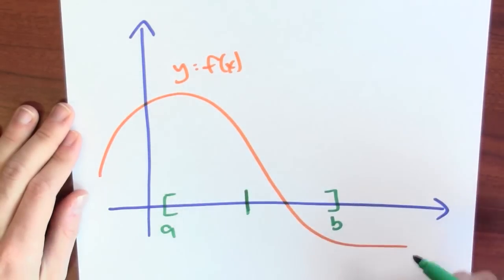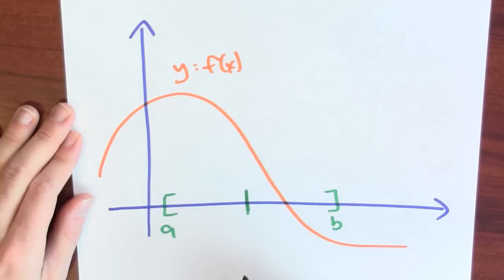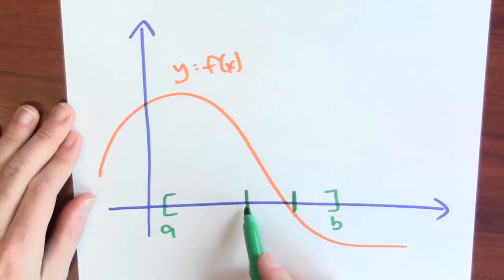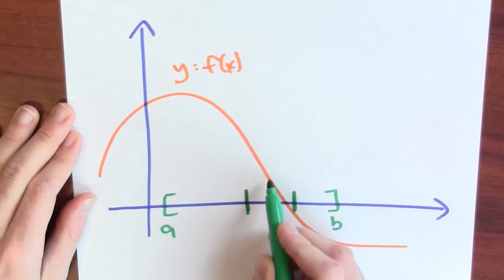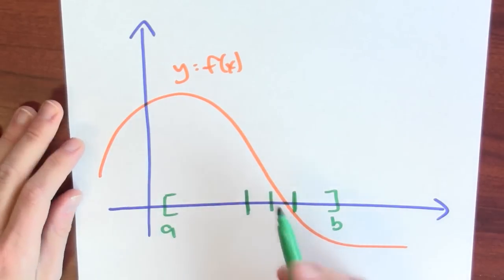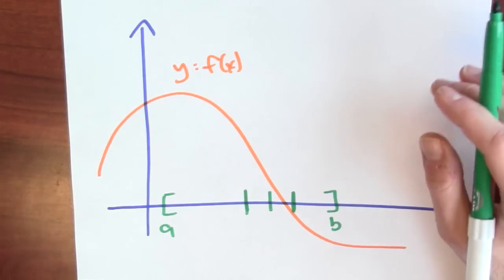I can cut this interval in half. If I look in the middle, the function's output there is positive, so between those two inputs there must be some input where the output is 0. Then I cut that in half again — the output is negative. So between those two inputs, by the intermediate value theorem, there must be a root. I keep repeating this, getting closer and closer. The downside to this bisection method is just speed — it takes a really long time.